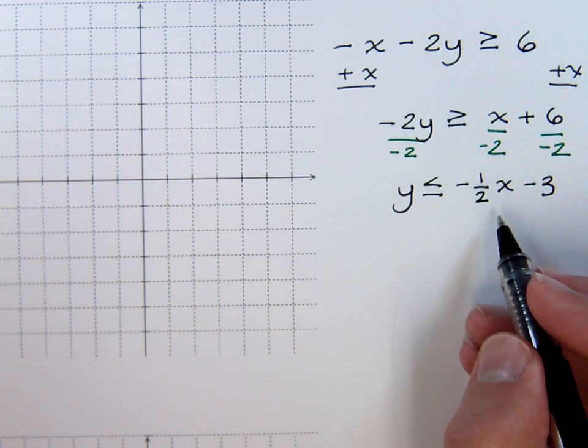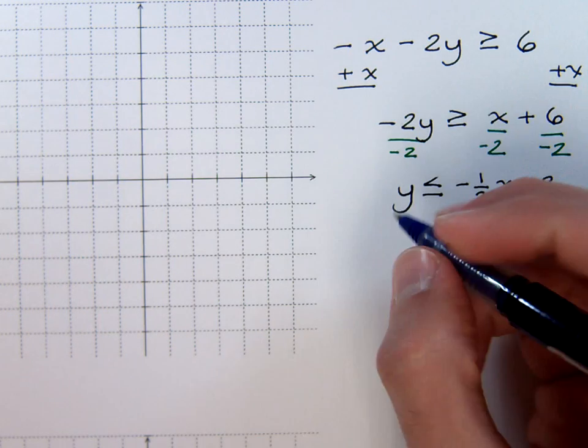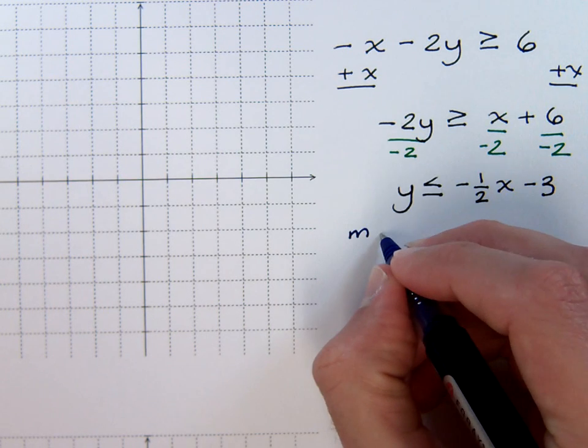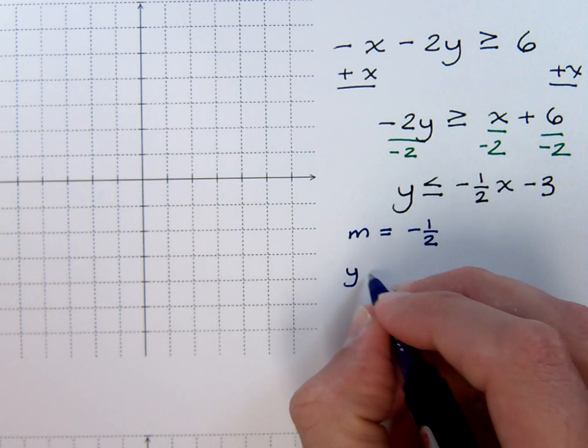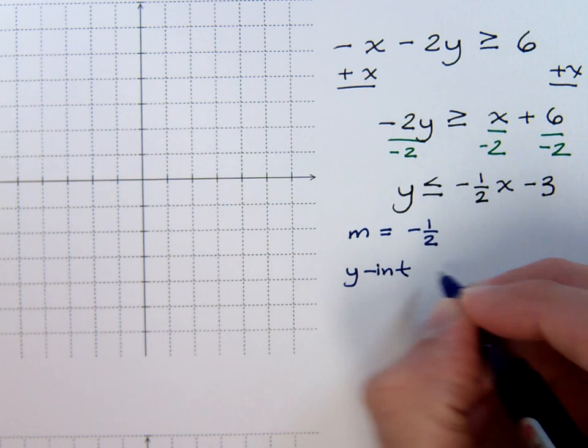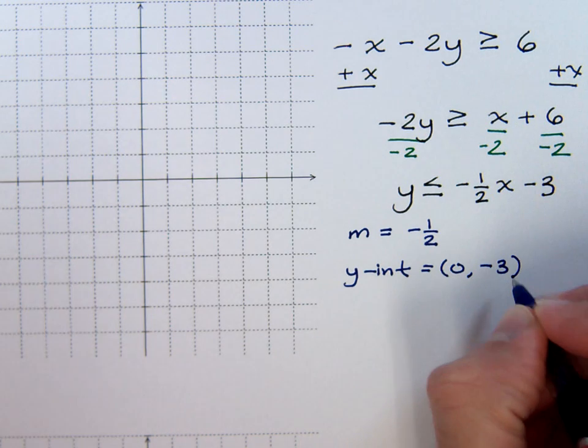Now from here we should be able to get a lot of good information. We know that the slope is equal to negative one-half and the y-intercept is the ordered pair 0, negative 3.